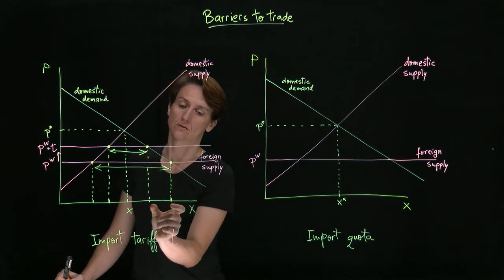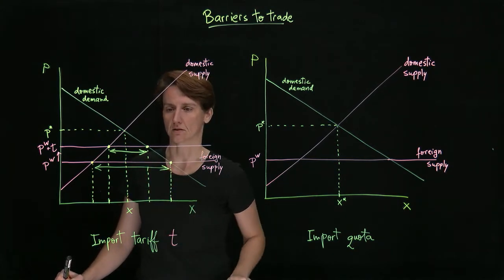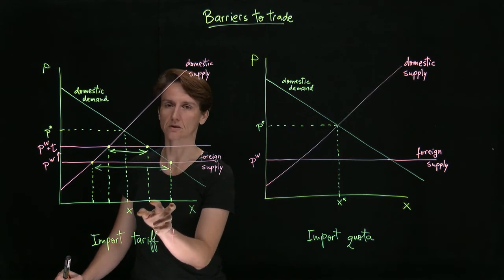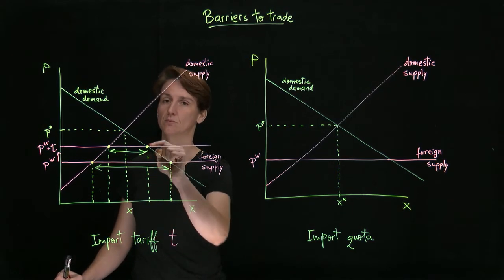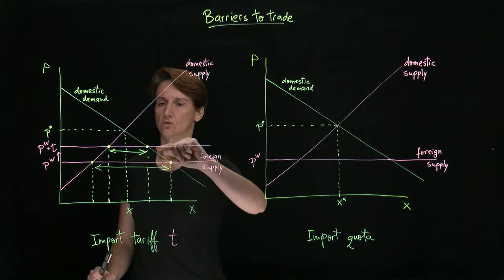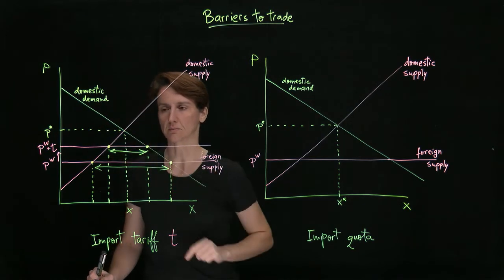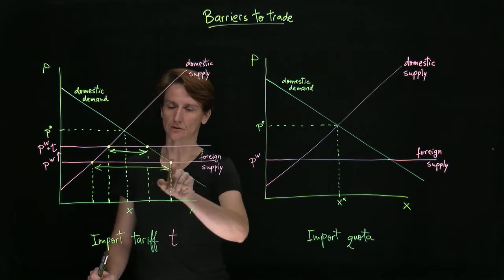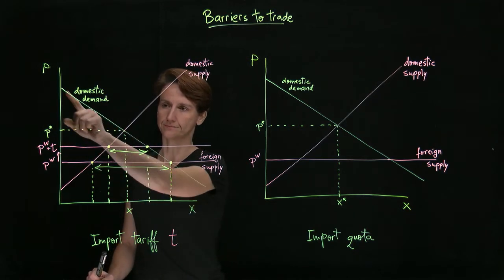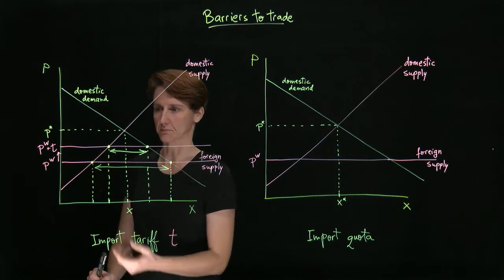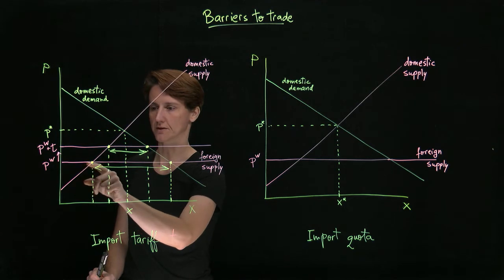However, we're also facing the consequence that domestic consumers purchase less and have to pay more for the good. So domestic consumer surplus decreases relative to the free trade case. Domestic producer surplus increases relative to free trade.